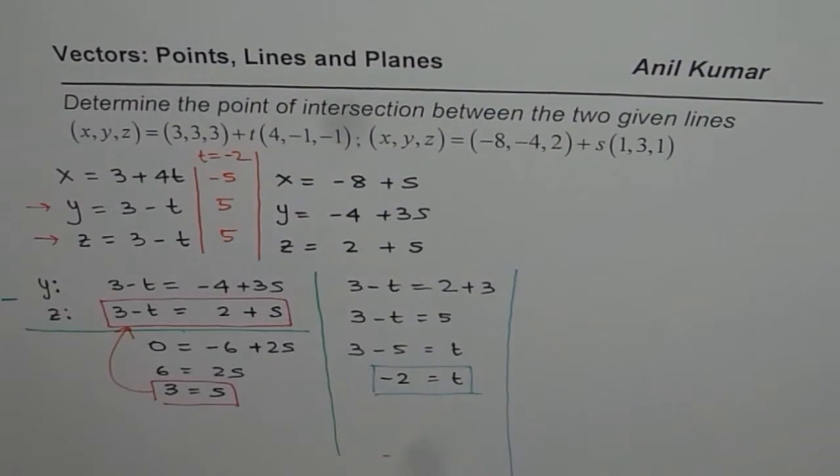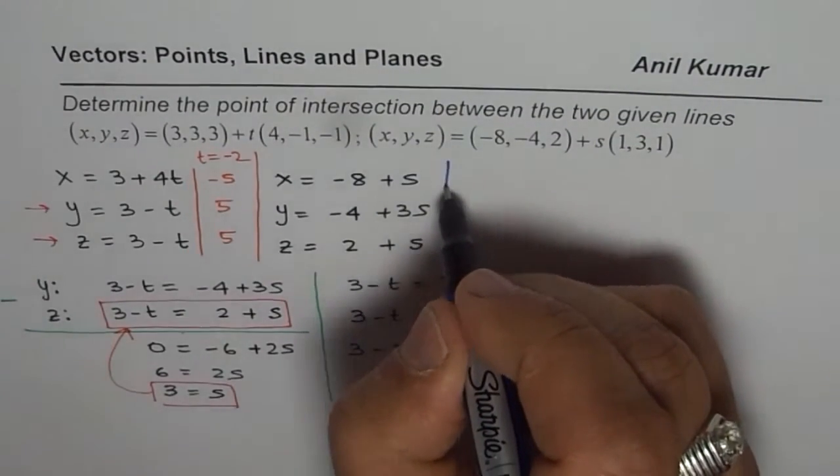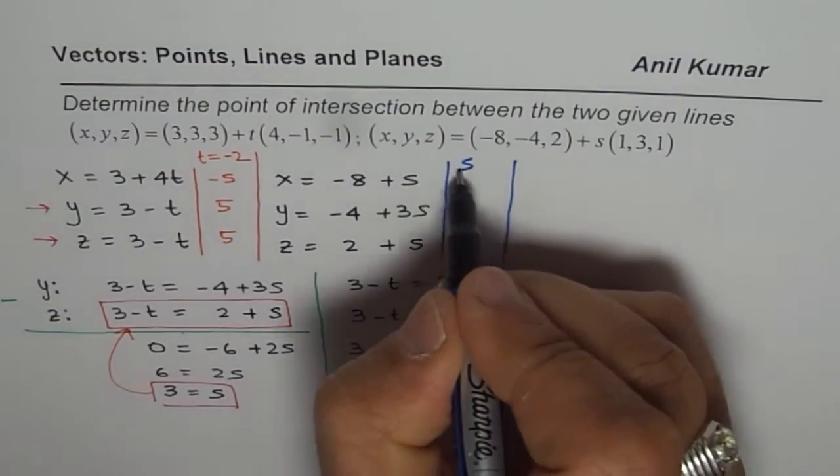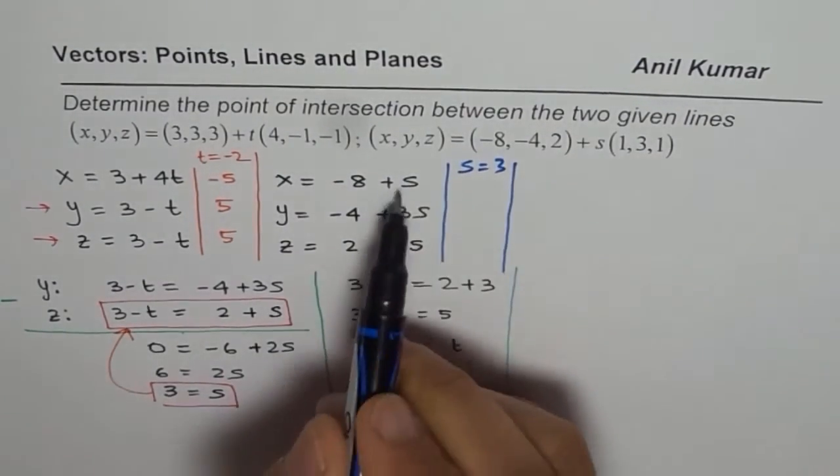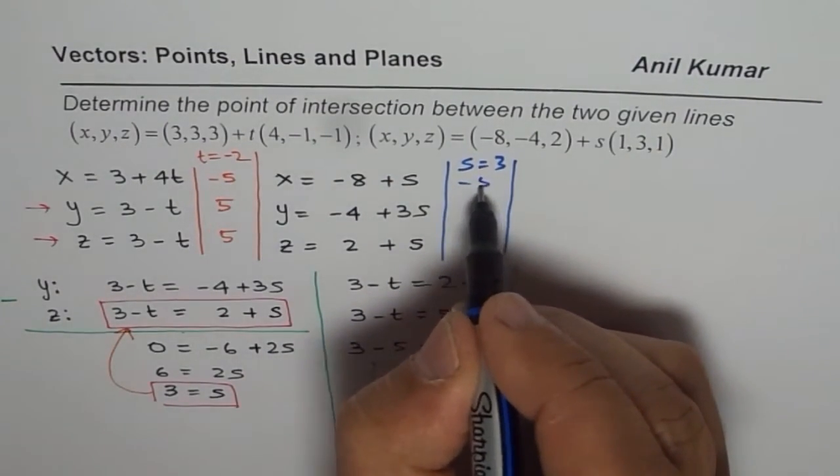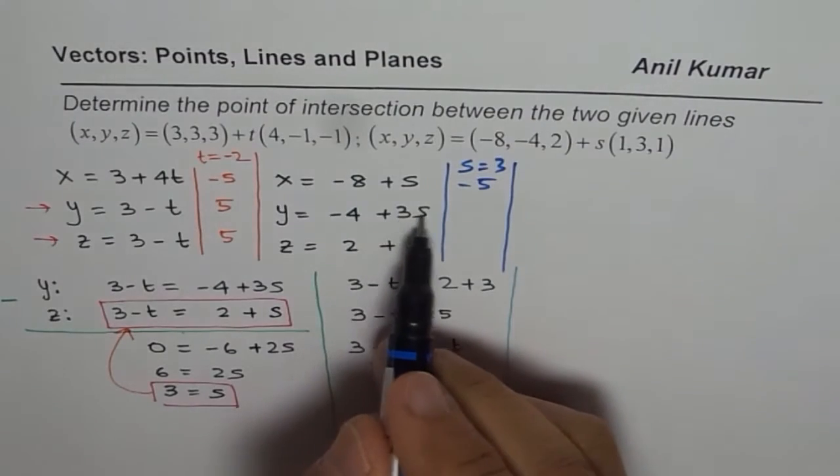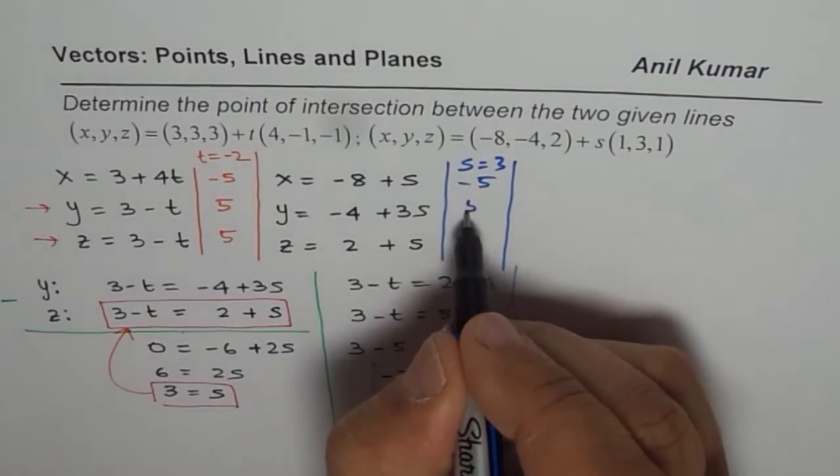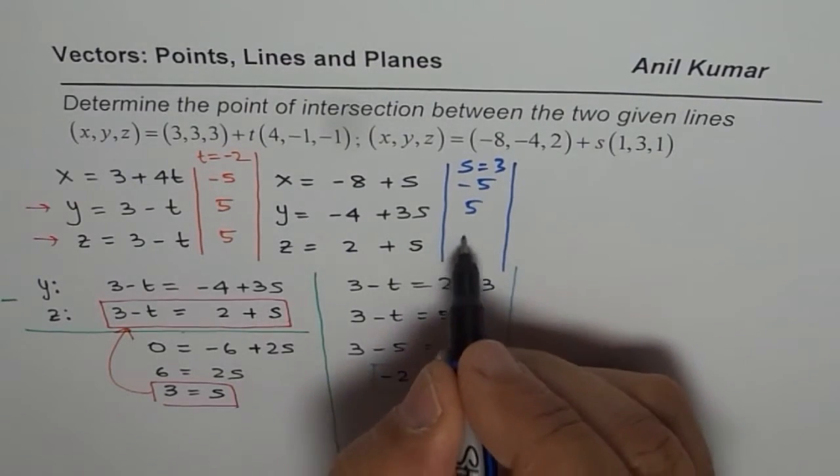Now let us also check the values for the second line. Do we get the same point? It is very important to check. S is 3, s equals to 3. If I substitute 3 here, minus 8 plus 3 is minus 5. 3 times 3 is 9, so minus 4 plus 9 is indeed 5, and 3 plus 2 is also 5.